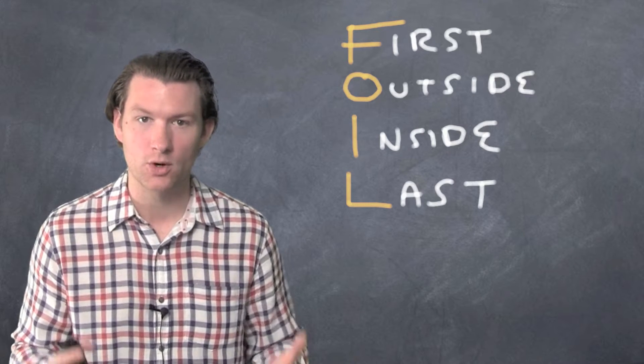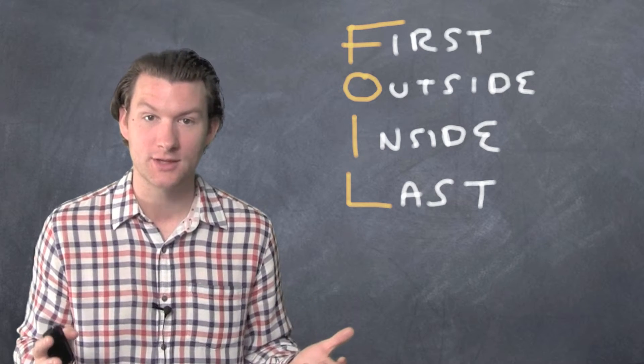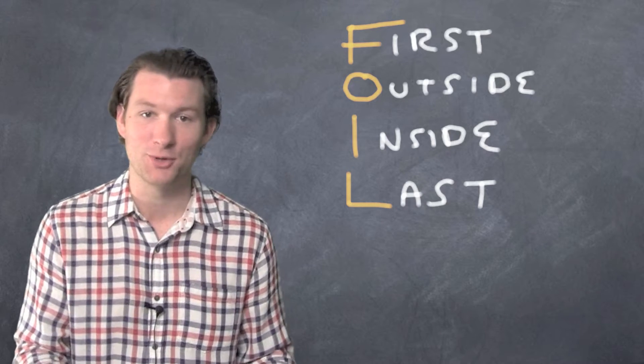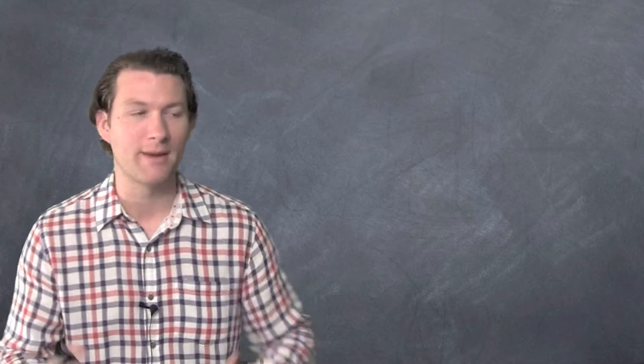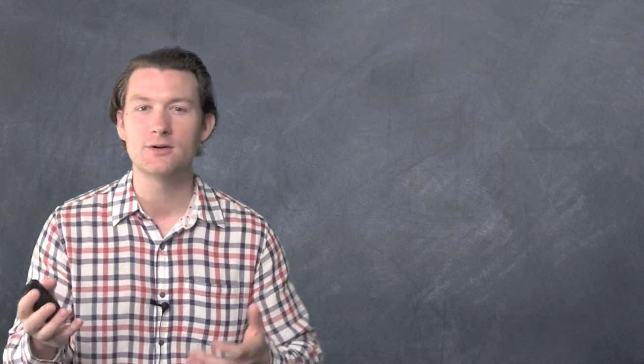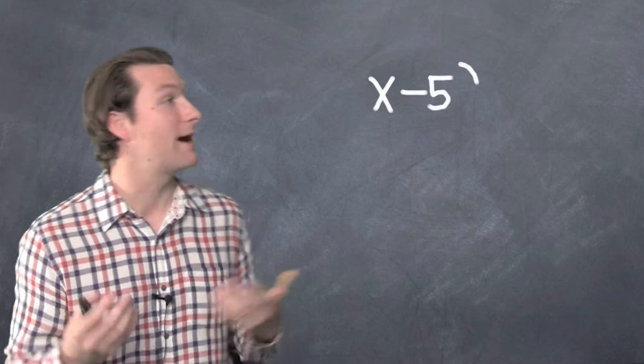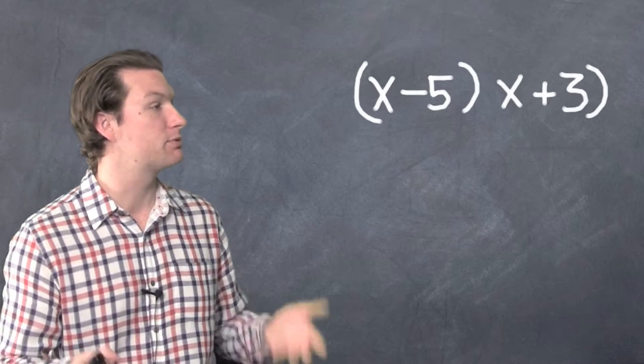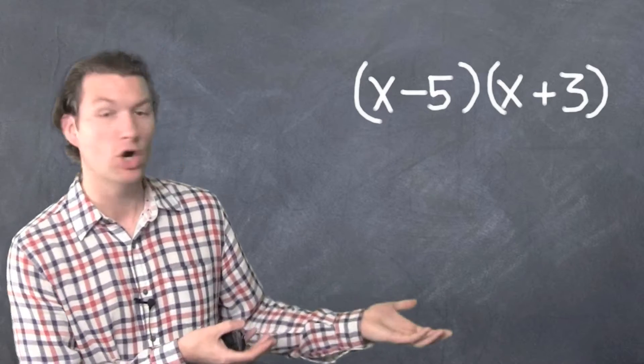We use foiling when we're multiplying binomials. What does that mean? Let me show you how we do it. What's a binomial? A binomial is something with a letter, plus or minus, and a number. So we could have X minus five. There's a binomial. Another one could be X plus three. All right, we've got two binomials here.